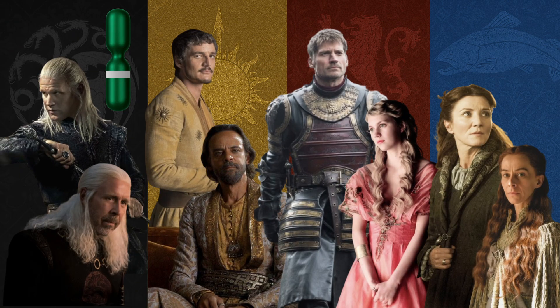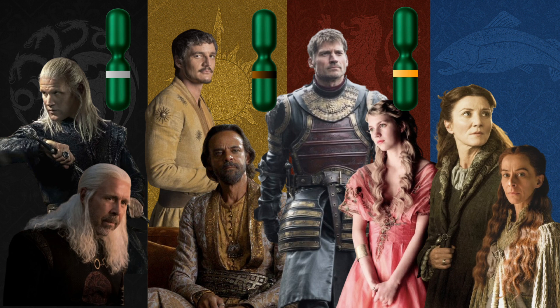The silver hair allele is responsible for the silver-golden hair of those of Valyrian origin. The dark allele makes black or brown hair. Then there is the blonde allele and the red allele.